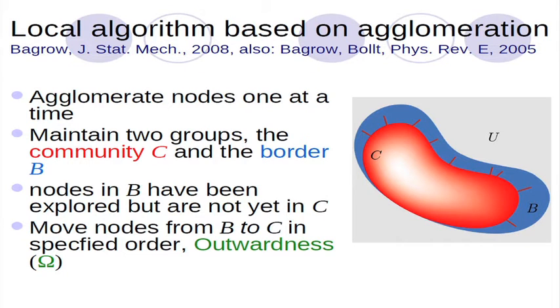Welcome back to this session on community analysis. Last time we defined what a community means both philosophically and quantitatively, and we saw various techniques for community detection. We have been looking into agglomerative techniques, and in the next few lectures we will see other methods like the bisection method and spectral bisection methods. Today we will start with a local algorithm based on agglomeration.